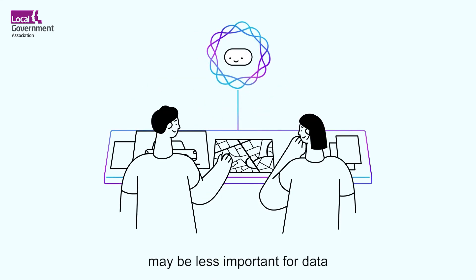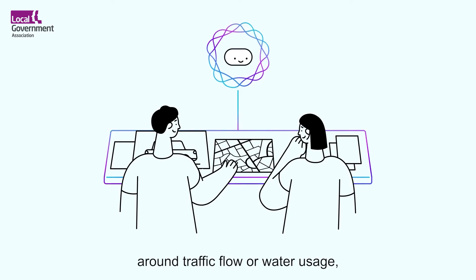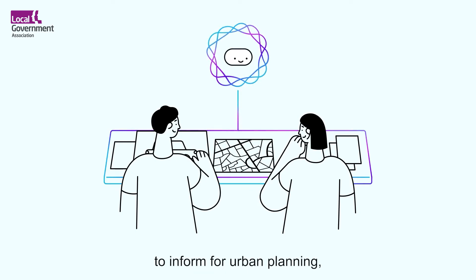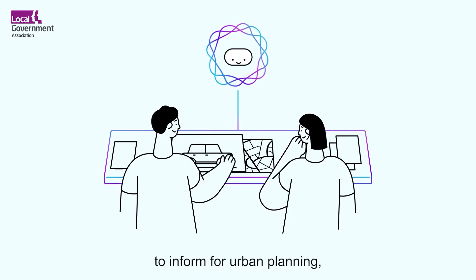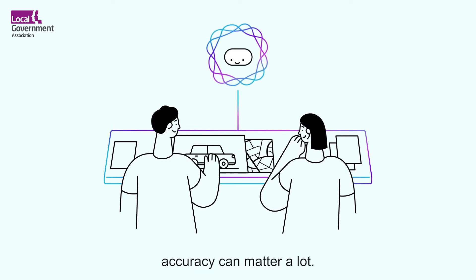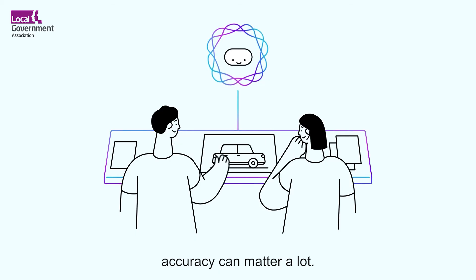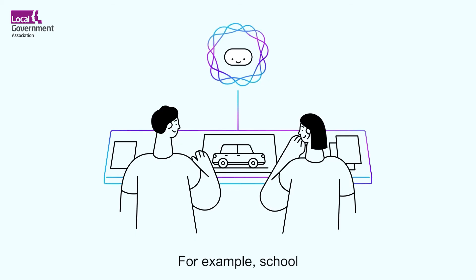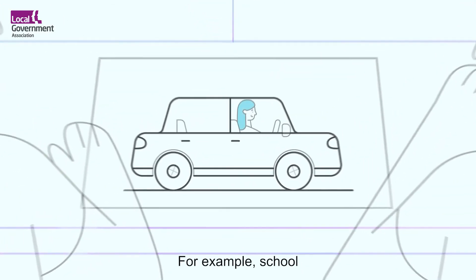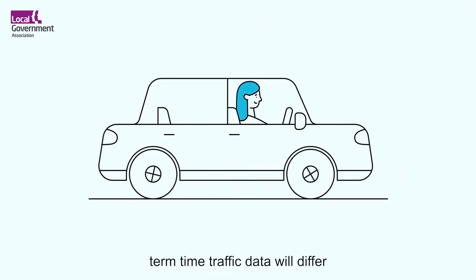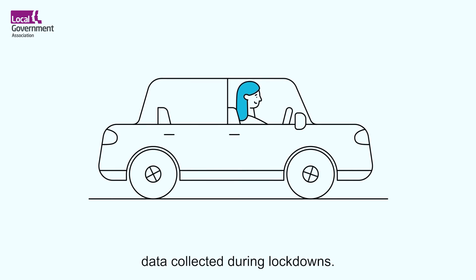While bias may be less important for data around traffic flow or water usage, to use AI to inform urban planning, accuracy can matter a lot. For example, school term time traffic data will differ from an annual picture, as will data collected during lockdowns.